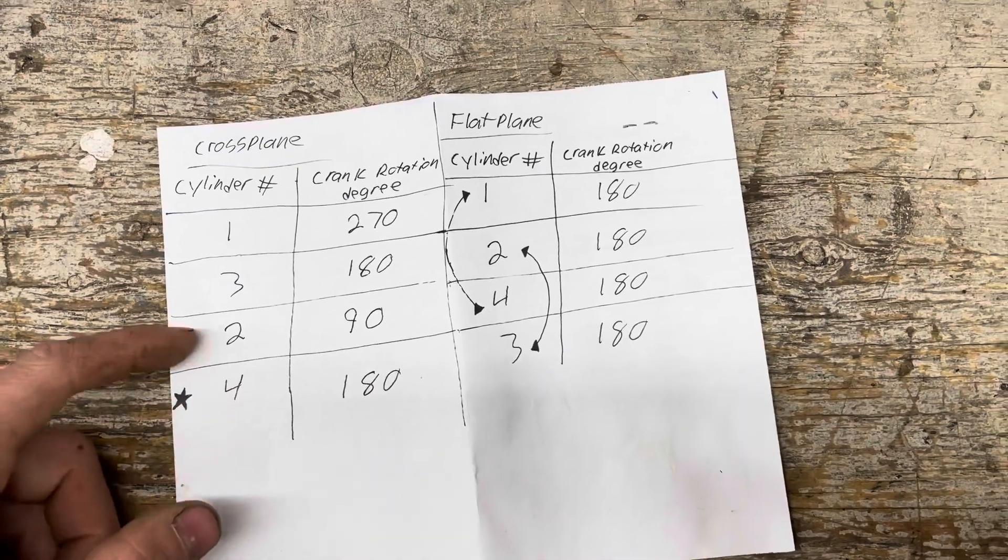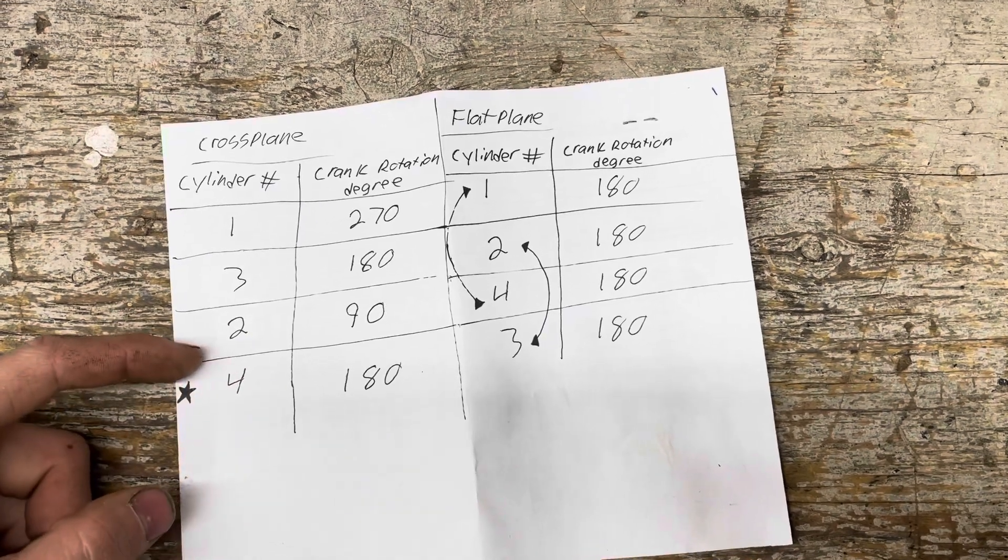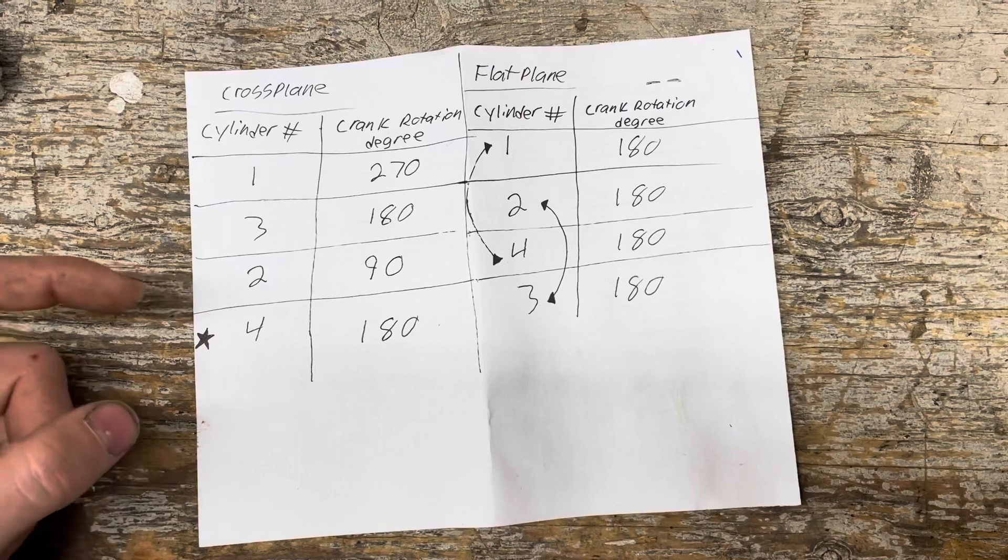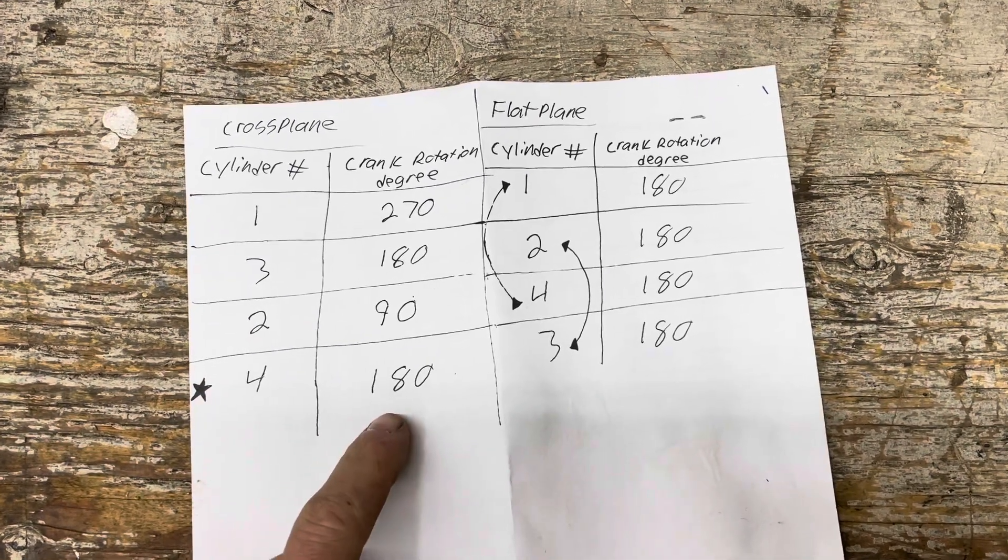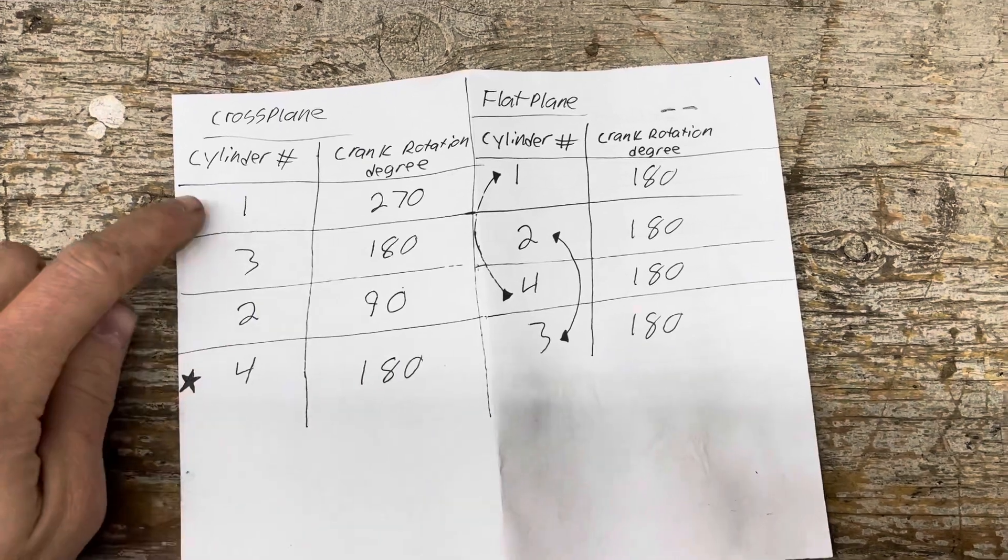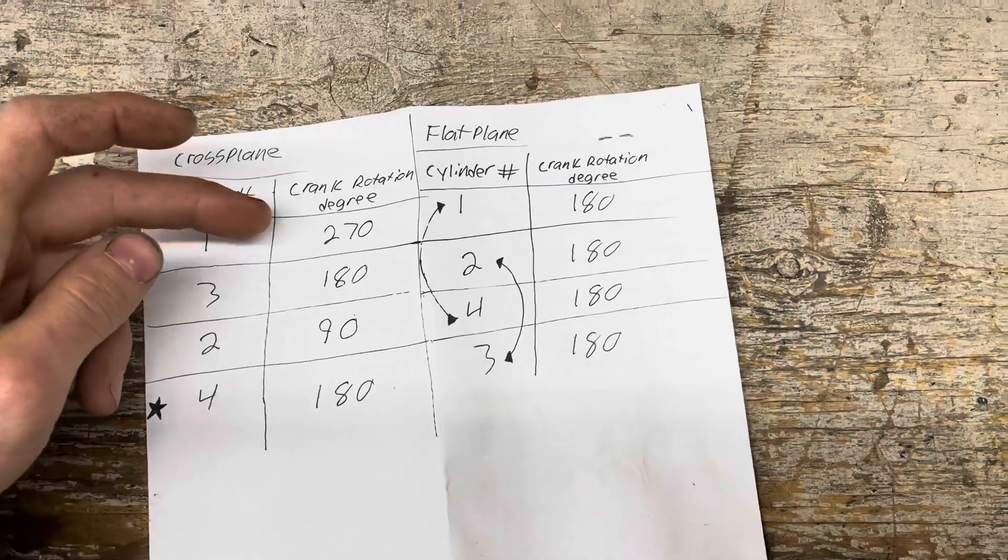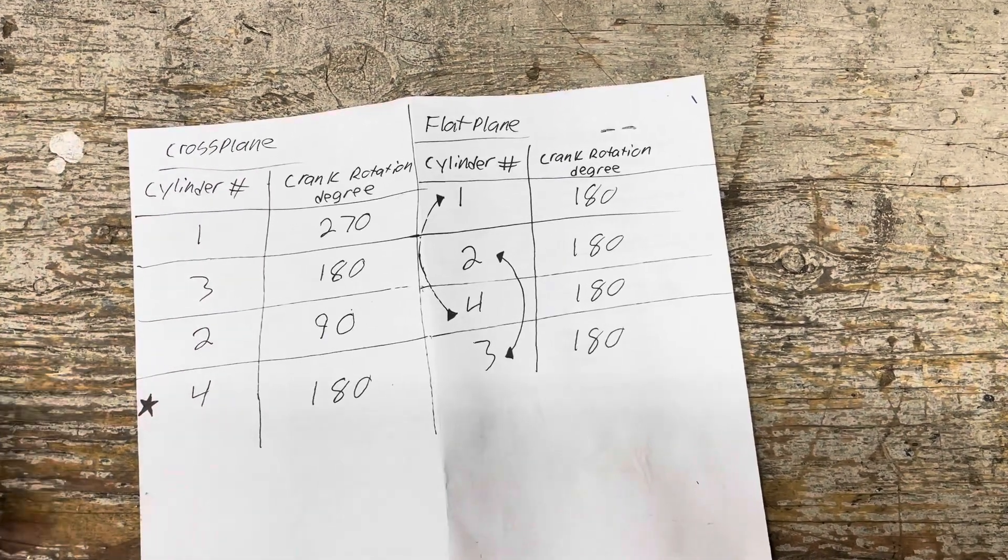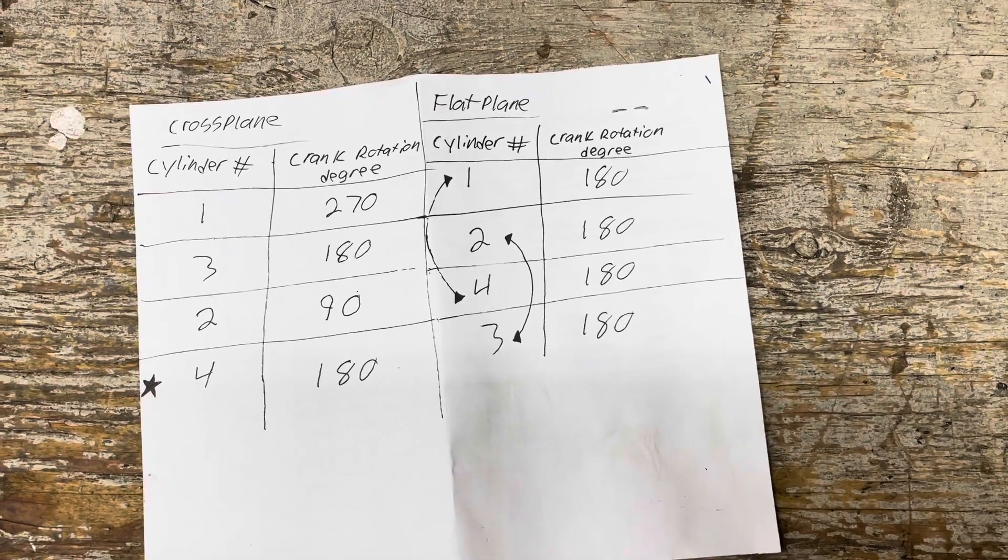So you more or less have a double power pulse. Cylinders two and four fire very close together. That's kind of why these bikes have the nickname big bang. And then after your double power pulse there you're a normal 180 degrees to get cylinder one back on top dead center. So this unique firing order and the distance between your actual firing events is what gives the cross plane that very unique burble and that muscly kind of lope sound.